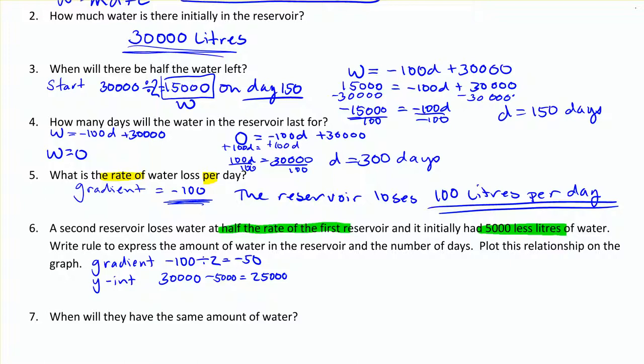So now I've got my gradient and my y-intercept for my new reservoir. So w is equal to md plus c. Because instead of using y and x, we're using w and d for water and days. Replacing my gradient, I'm going to put a negative 50, because it's half of what the other one was, d plus 25,000. So that is my new equation.